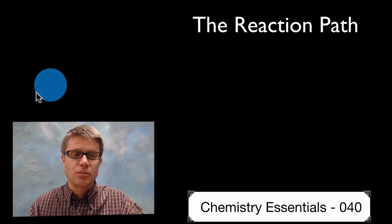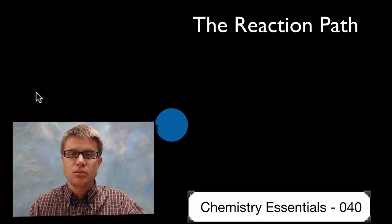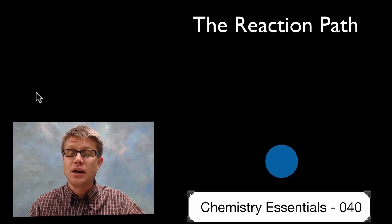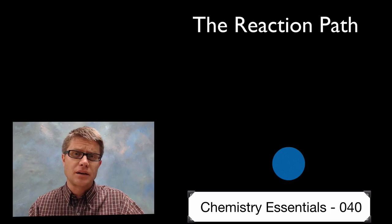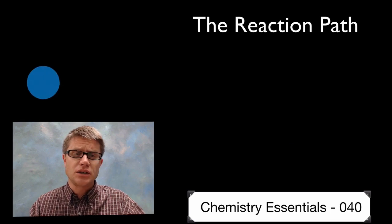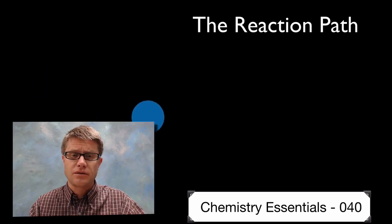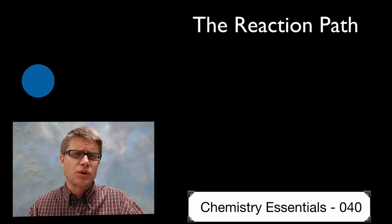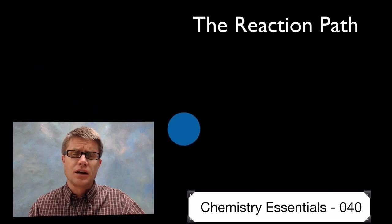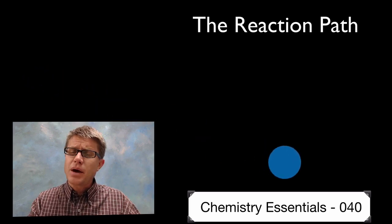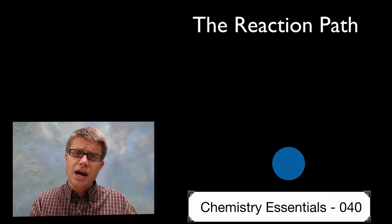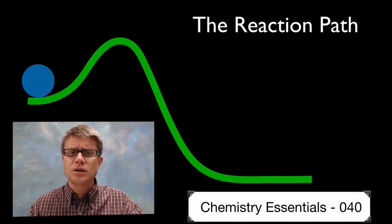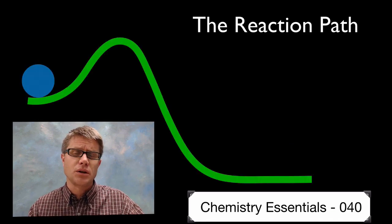If I want to move this object from point A to point B, it's going to travel along a path. It looks like a pretty straight path from A to B. But if we look at the reaction path — in other words the path from reactants to products — it's not going to be so straight. It's going to follow along a curved energy profile.